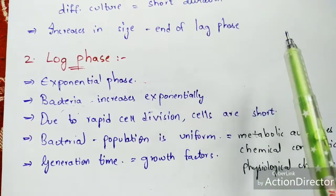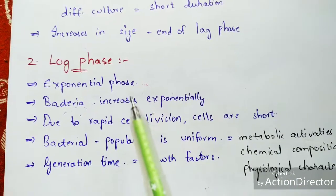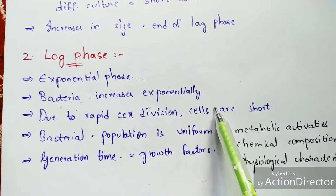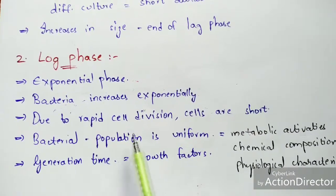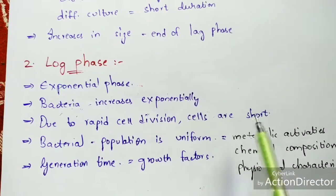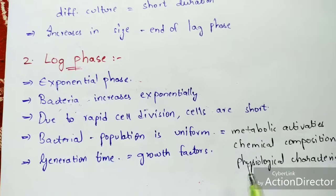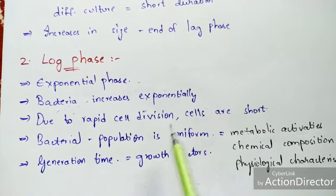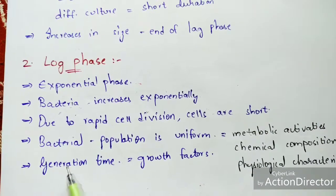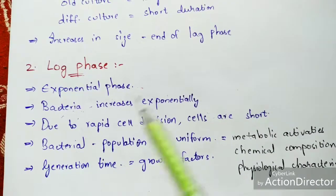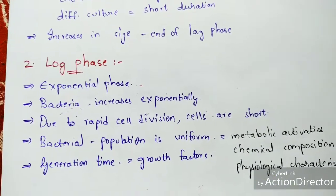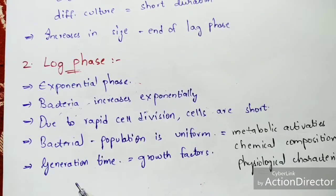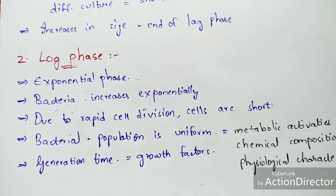Due to rapid division, the newly formed cells are very small in size. The bacterial population is also uniform in this phase, depending on metabolic activities, chemical composition, and physiological characteristics. The generation time in the log phase depends on growth factors present in the sterilized medium. According to recent research, this generation time is very short regardless of the type of bacteria introduced.